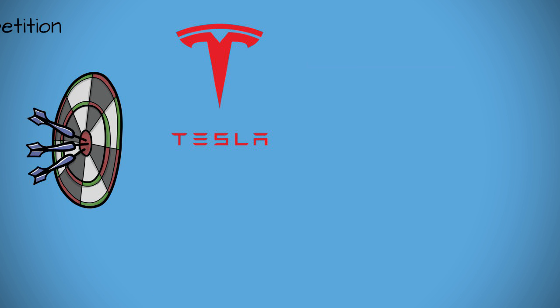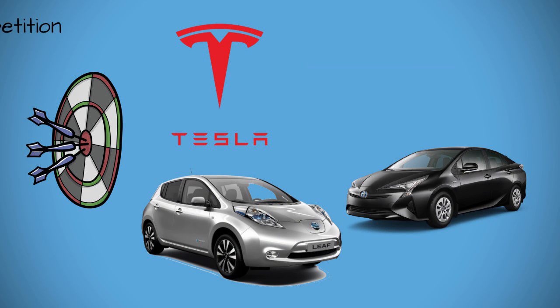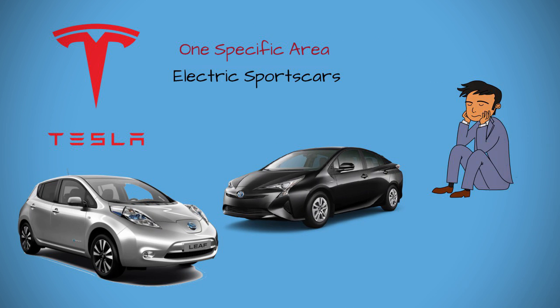For example, when Tesla first started, they didn't dominate the entire electric car market. Toyota already had the Prius and Nissan already had the Leaf. So what they did instead was focus on one specific area: electric sports cars, or electric supercars rather. They made the Tesla Roadster.